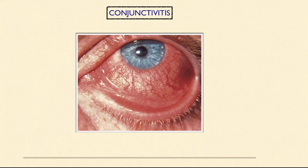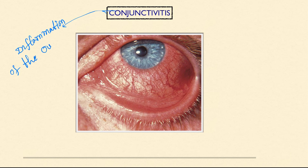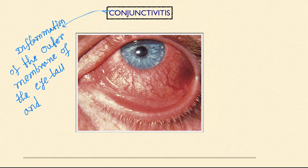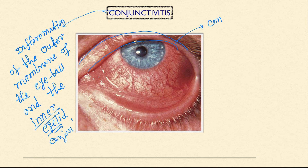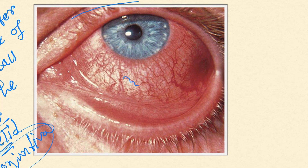Hello friends, today our topic is conjunctivitis. Conjunctivitis is inflammation or infection of the outer membrane of the eyeball and the inner eyelid. The inner surface of the eyelid is called the conjunctiva. That is the name conjunctivitis — inflammation of the conjunctiva. You can see that large dilated blood vessels are present, which are signs of inflammation.